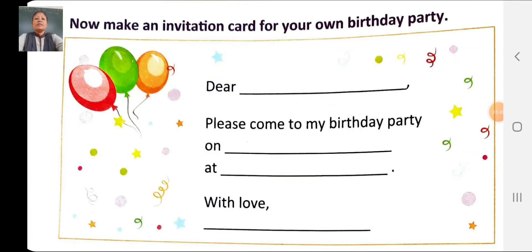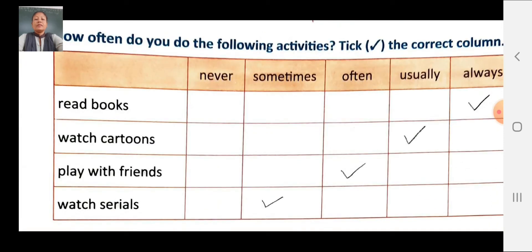Now here you have to write your own invitation letter. Dear dash — write your friend's name. Please come to my birthday party on dash — write the date of your birth. At dash — write the time. With love, dash — write your name. Next exercise: how often do you do the following activities? Tick the correct column.